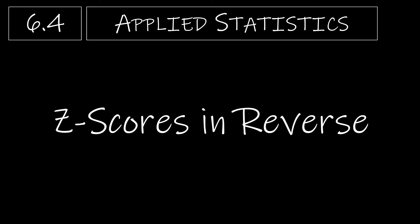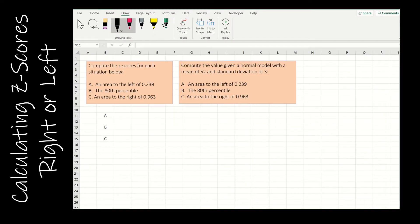In this video, we're going to think backwards in terms of what we've been doing. So what we've been doing is we've been given the mean, the standard deviation, and a raw value, and we used that to find the z-score and the probability. Now we're going to be given the probability, and we have to use that to find the z-score and the raw value.